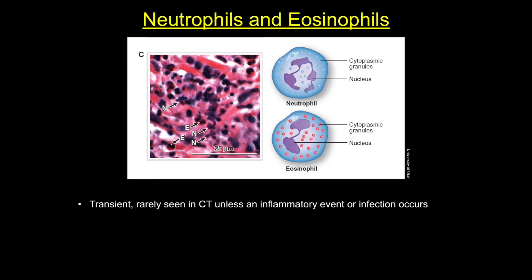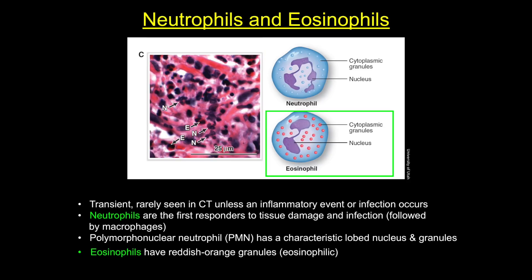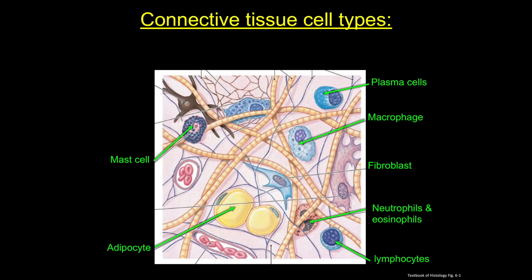Last but not least, we have neutrophils and eosinophils — two more transient immune cells that can be recruited to connective tissue. The neutrophil is the EMT of the immune system, responding first to damage and infection. It's the most recognizable white blood cell with its multi-lobe nucleus and granules, but the eosinophil runs a close second with its bright orange-red granules. I'll leave you with a summary of all the major connective tissue cell types. As we move through the unit and through the body systems, we'll add more details about the functions and associated pathologies of these cells. That's it for today — thanks for stopping by.